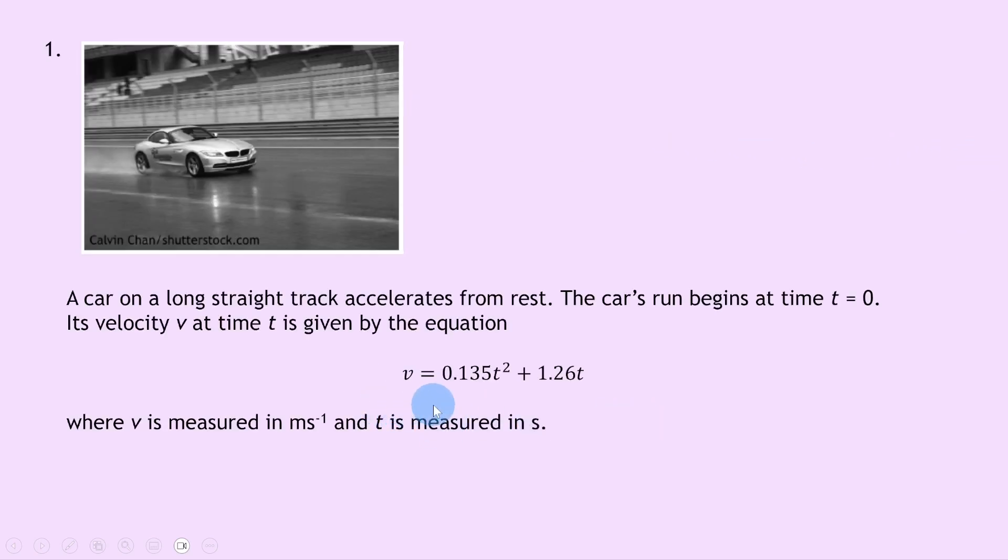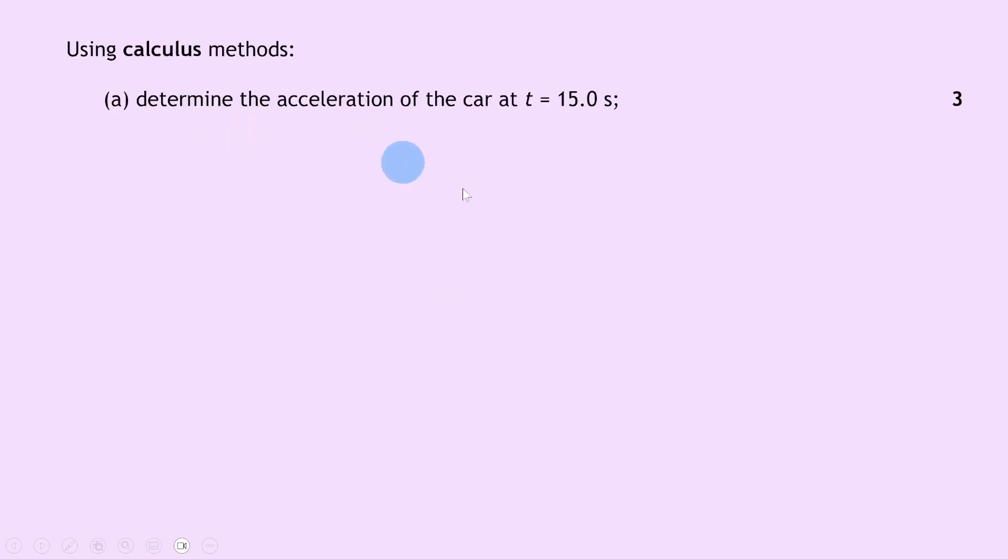Remembering the question, we're given an expression for the velocity v in terms of time t and we're asked to determine acceleration. So to go from velocity to acceleration we need to differentiate the velocity v with respect to time t.